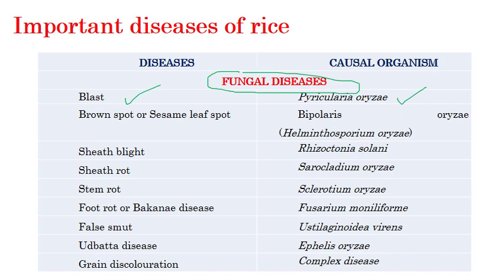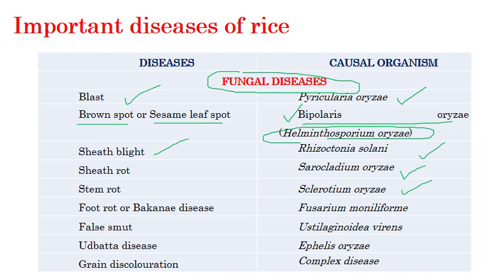The important fungal diseases of rice include: Blast caused by Pyricularia oryzae; Brown Spot or Sesame Leaf Spot caused by Bipolaris oryzae (previously Helminthosporium oryzae); Sheath Blight caused by Rhizoctonia solani; Sheath Rot caused by Sarocladium oryzae; Stem Rot caused by Sclerotinia sclerotiorum oryzae; Foot Rot or Bakanae disease caused by Fusarium moniliforme; False Smut caused by Ustilago virens; Udbatta caused by Ephelis oryzae; and Grain Discoloration, which is a complex disease caused by more than one type of fungal pathogen.